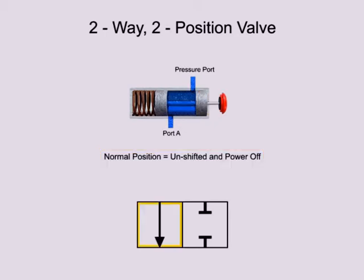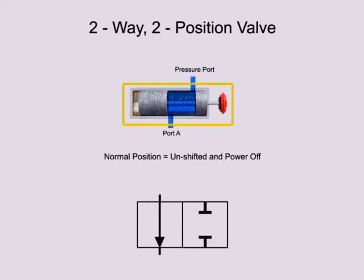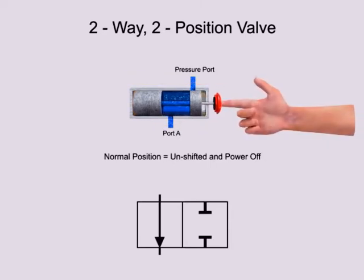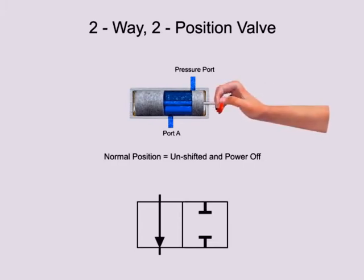In this case, position 1 is the normal position. Therefore, the lines to indicate the normal position are drawn in the first box. On a hydraulic schematic, the lines that indicate the normal position will be connected to other devices in the system. Valves that do not have mechanical or electrical actuators do not have a normal position because they must be manually moved. When shifted, they remain in that state until manually shifted to another position.